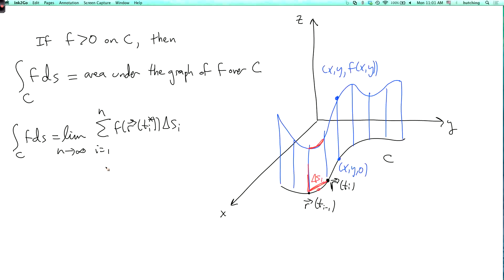And an application, for example, is that, let's do another page here. So suppose that the curve c is a wire with mass density rho. Then the mass of the wire is, let's call this M, is the integral over c of rho ds.